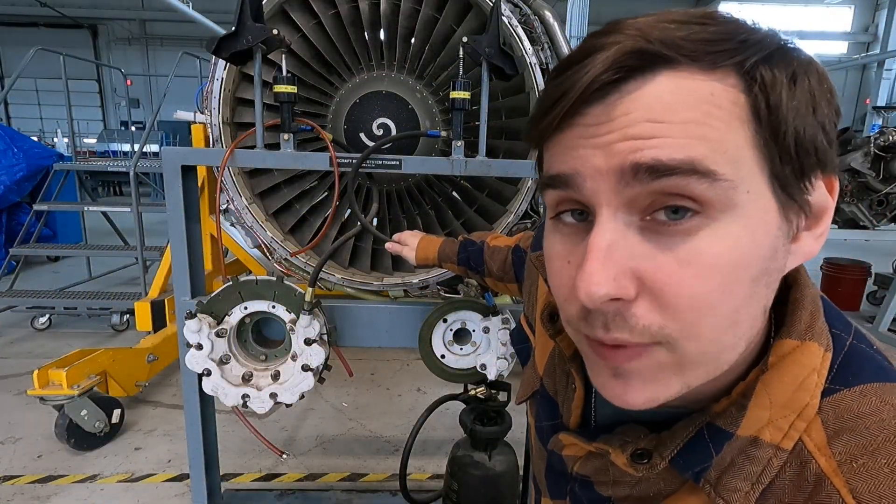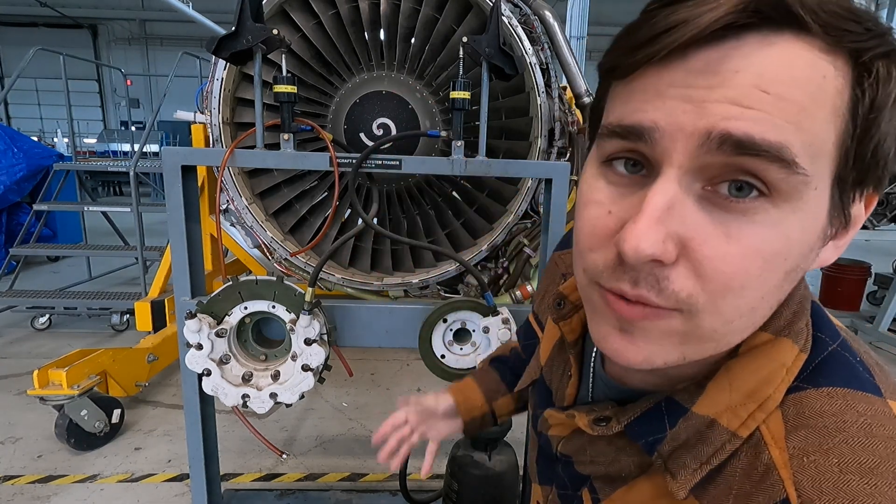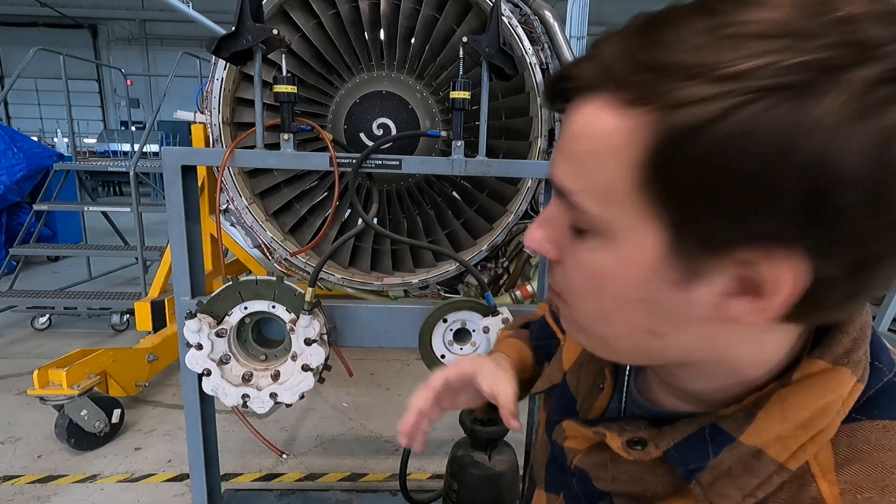Anyways, so here we go. I've got two different types of systems on a trainer that we have here at the school. I'm going to take you to the classroom here in a minute and break this down even further with the diagram.